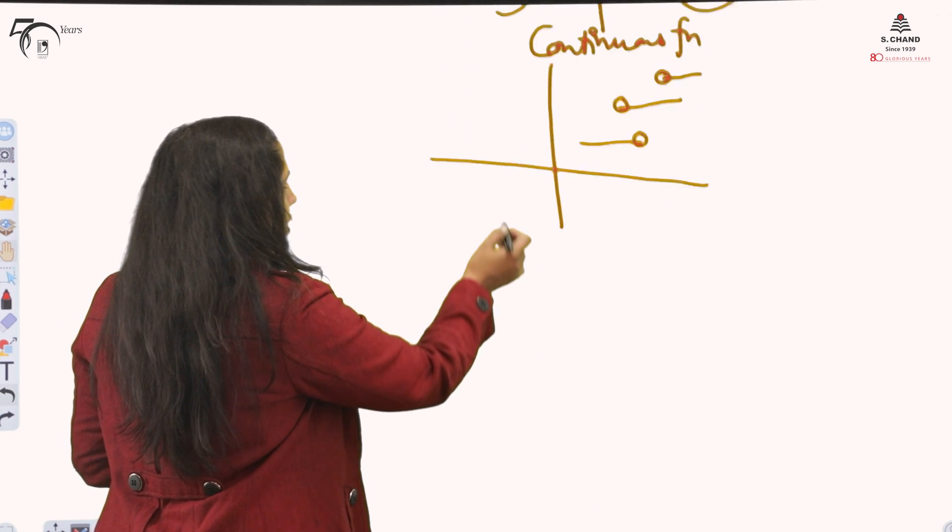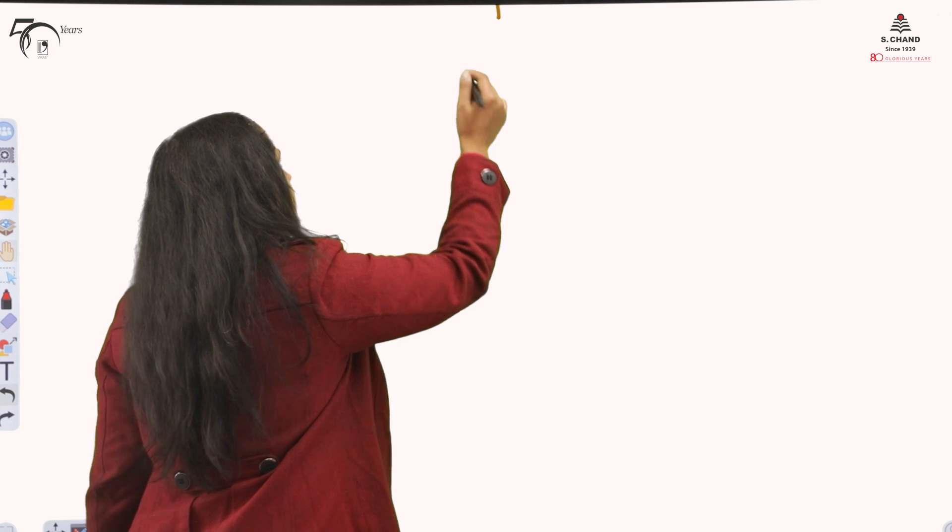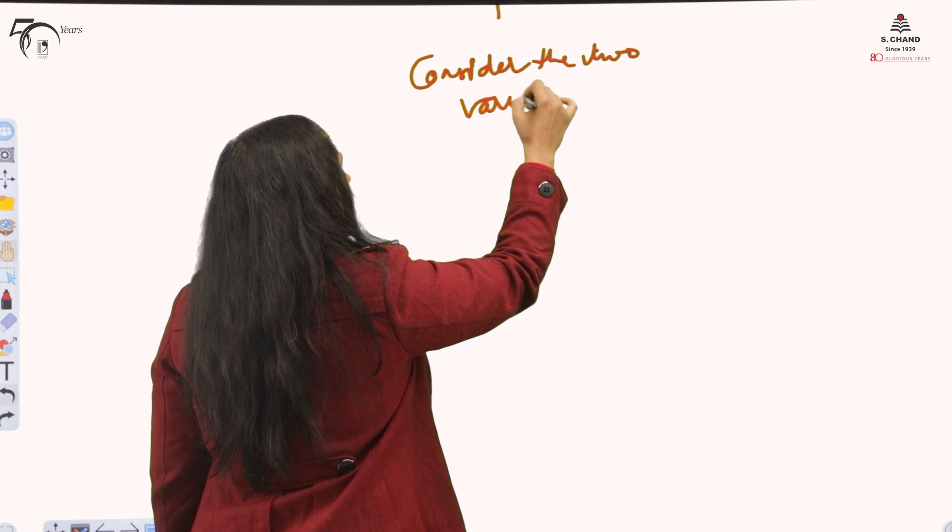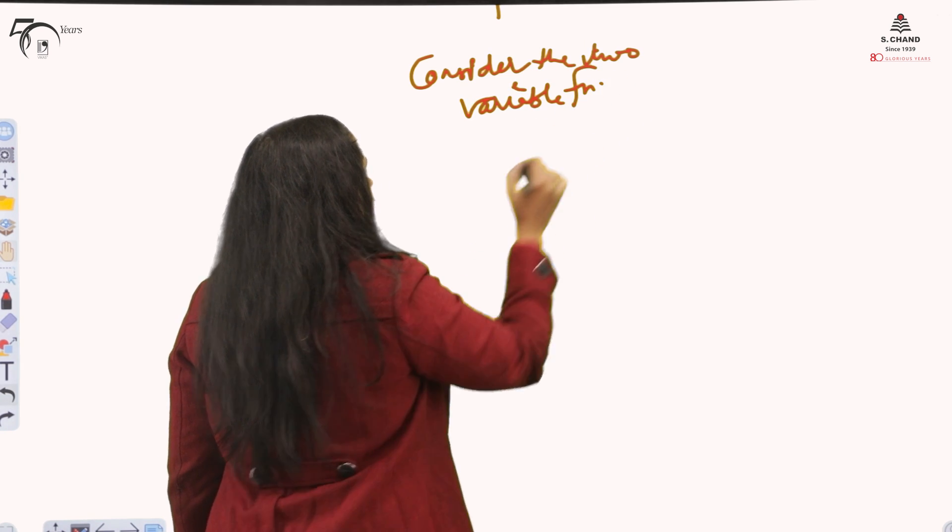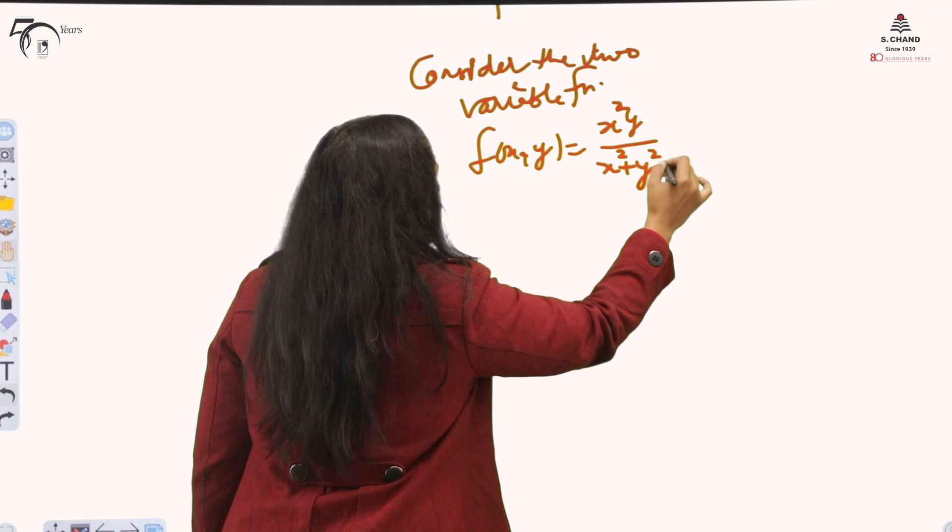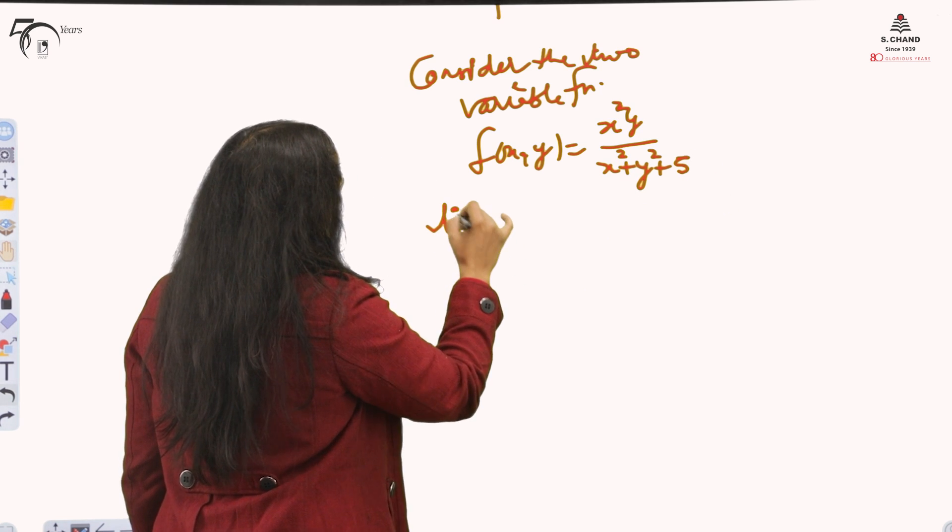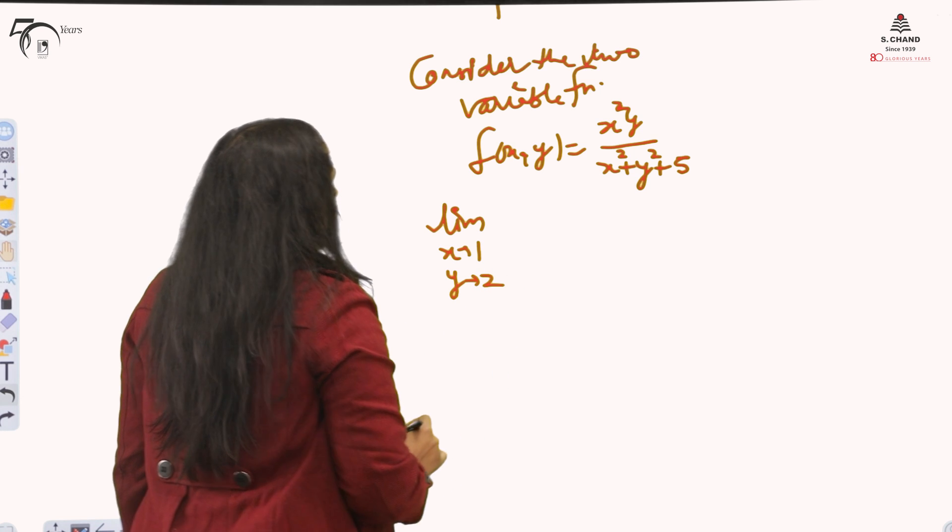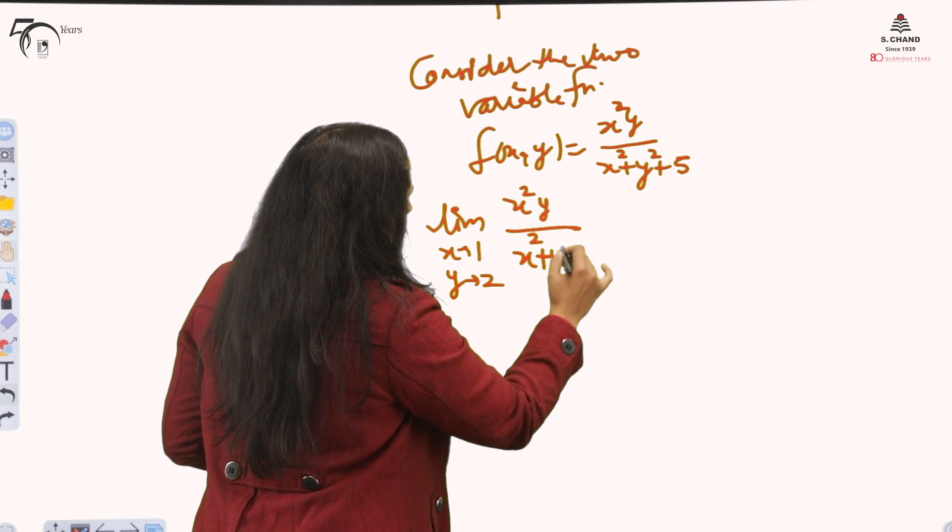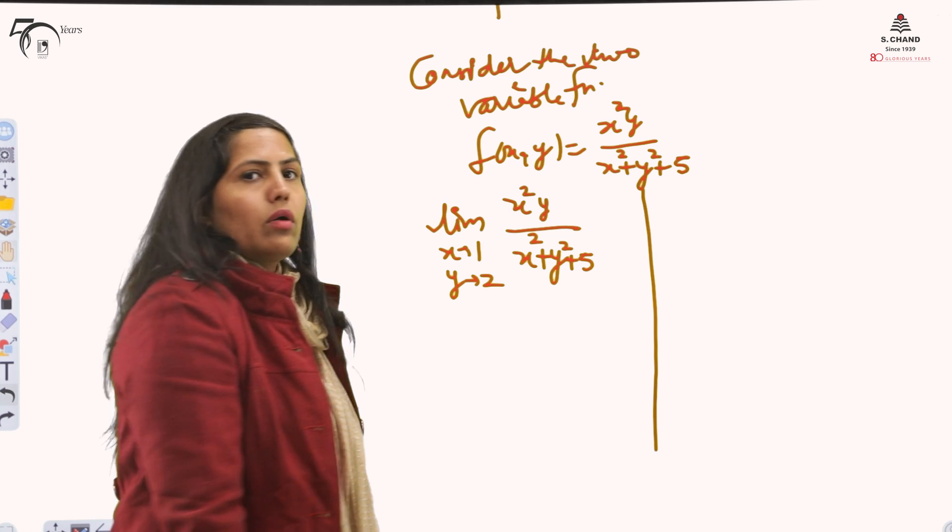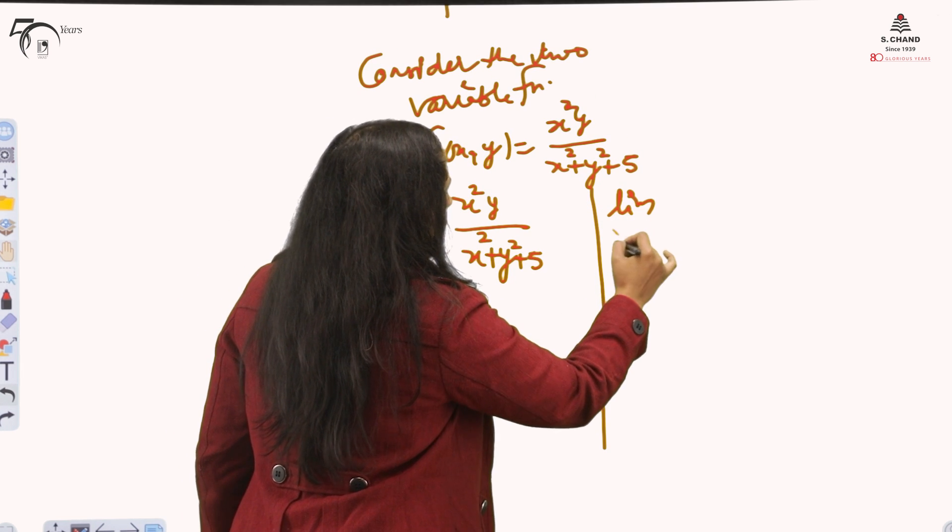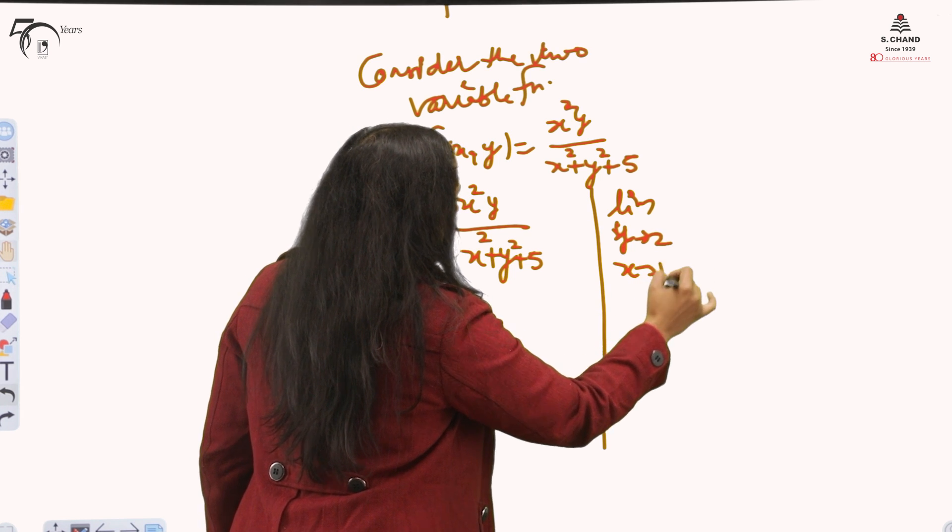Now, coming to the point, how to find limit for two variable function. I am considering one. Consider the two variable function f(x,y) = x²y/(x² + y² + 5). Suppose we want to know the limit. Here limit doesn't mean the way we have done in our 12th class for one variable. How we do it? We have simultaneous limit concept here. Simultaneous limit concept. Two ways to find.